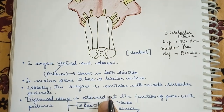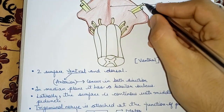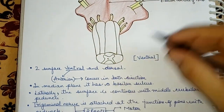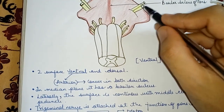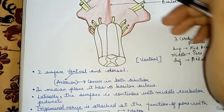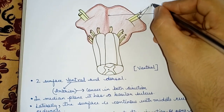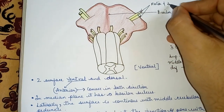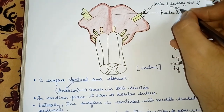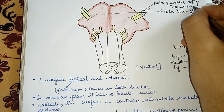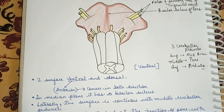The trigeminal nerve is attached at the junction of pons with the peduncle. Trigeminal nerve has two roots — one is motor and the other is sensory. The larger one is the motor root and the smaller one is the sensory root of the trigeminal nerve.